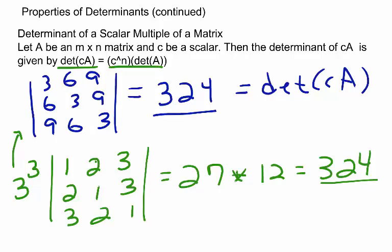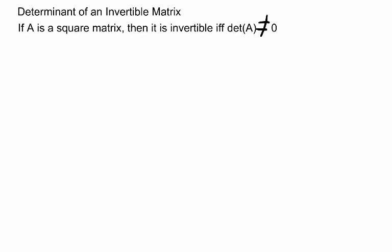Let's take a look at another property. We'll look at the property for the determinant of an invertible matrix. Actually, I'd like to rephrase that property. It's better to say determinant of an invertible matrix. This property states: if A is a square matrix, then it's invertible if and only if the determinant of A is not equal to 0.